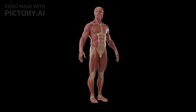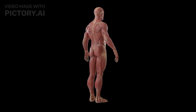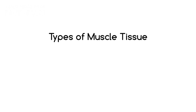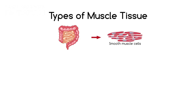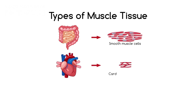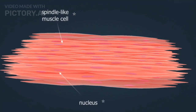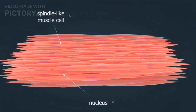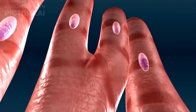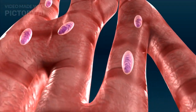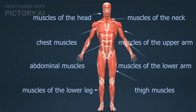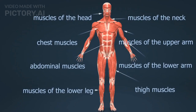Now let's learn about muscle structure and function. The human body has three types of muscles. Smooth muscle is involuntary, found in internal organs like the stomach. Cardiac muscle is found in the heart, responsible for pumping blood. Skeletal muscle is a voluntary muscle, striated in appearance, and responsible for locomotion.